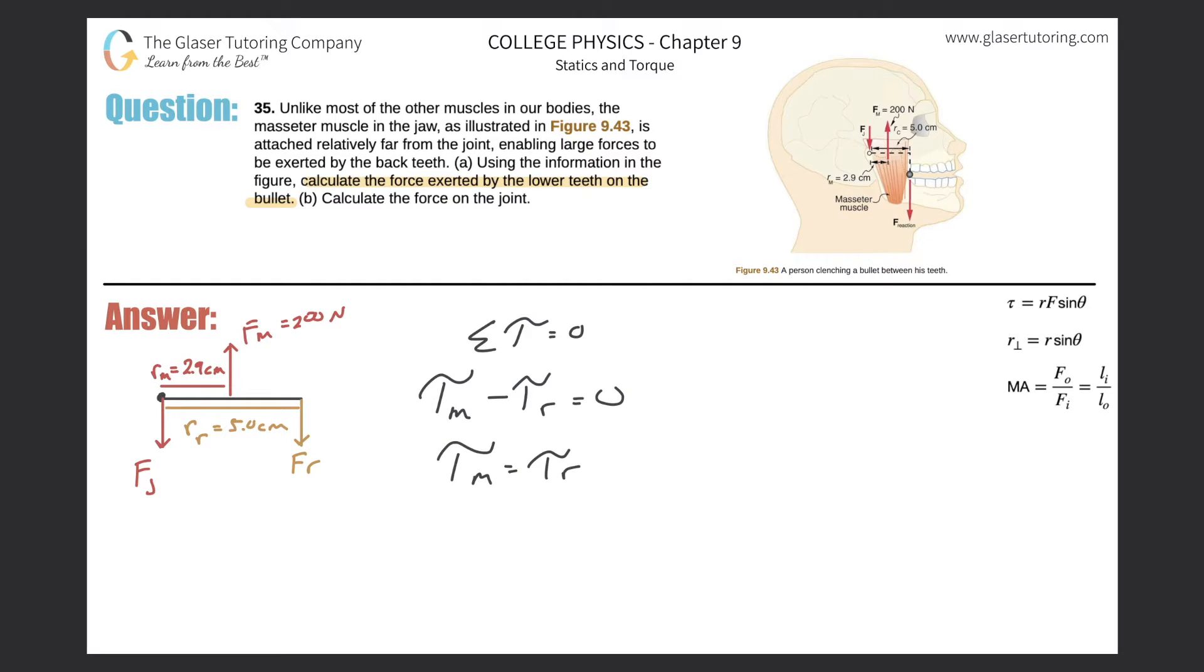We have these perpendicular lever arms: the perpendicular lever arm of the masseter muscle multiplied by the force that muscle is applying equals the perpendicular lever arm of the reaction force multiplied by that reaction force. Solving for what we're being asked for—the force—we rework this: F_r equals r_m times F_m all over r_r.